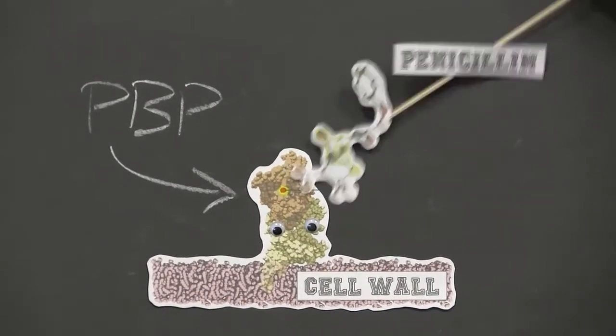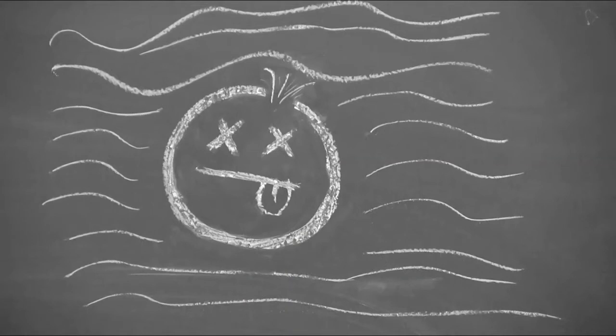Like any protein, a change in shape changes its function. PBP can no longer cross-link the monomers. A hole is left in the cell wall of bacteria from which water can enter the bacteria and drown it.